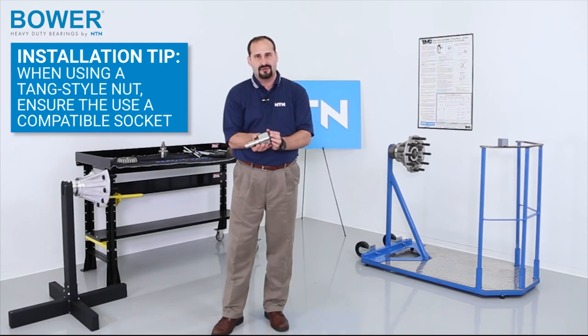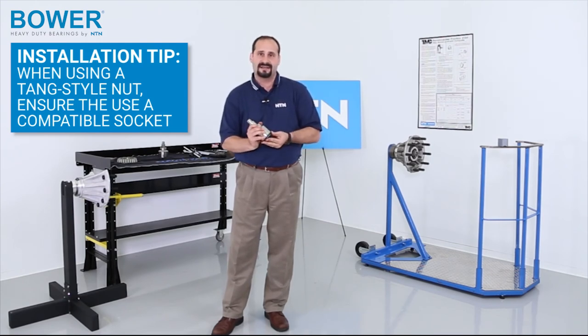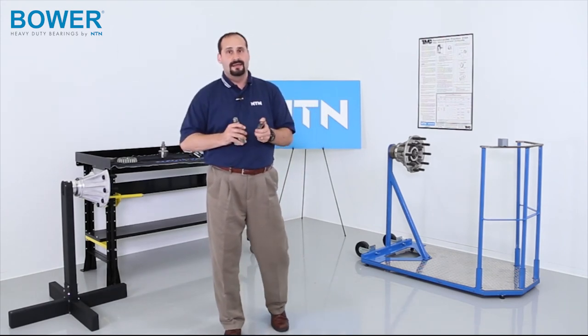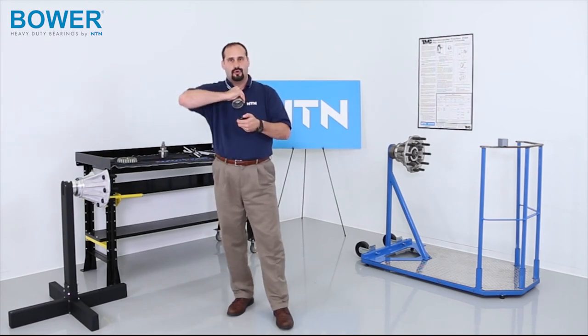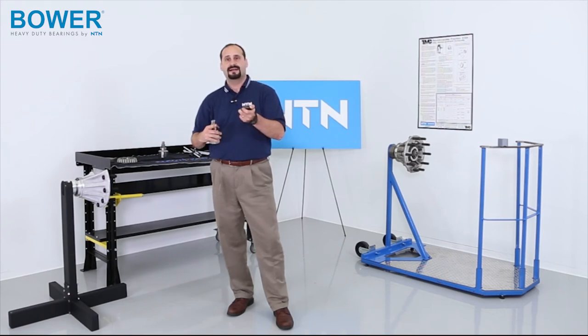This particular one right here, it's kind of the Tane style. What happens is the socket goes over the nut, depresses the Tanes, and then you can move it, tighten and loosen it. As you can see, I'm having a hard time. That's because my socket doesn't fully depress these Tanes. You want to make sure you have a socket that fits this snugly because if not, when you torque down, you can shear these Tanes off and that's what's locking this nut in place.